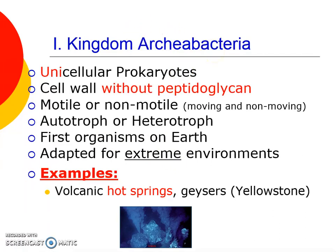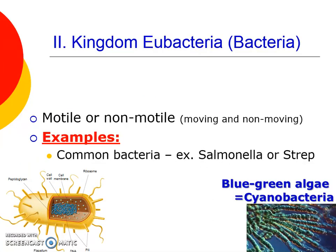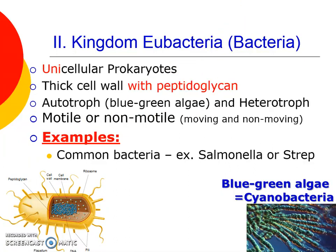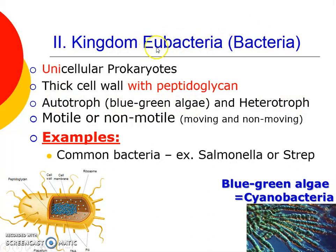Let's talk about the next category of bacteria, which is called eubacteria. Again, they're also one-celled, unicellular, without nucleus. But this time the cell wall does have that molecule — peptidoglycan. They can be autotrophs or heterotrophs. Here's a specific example: algae can be a bacteria, specifically this true bacteria called eubacteria. That prefix 'eu' means true.